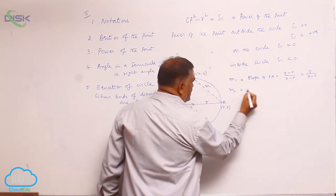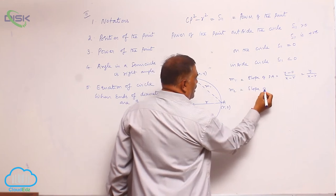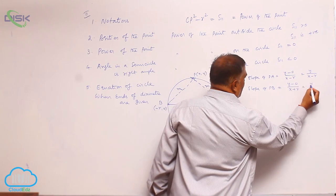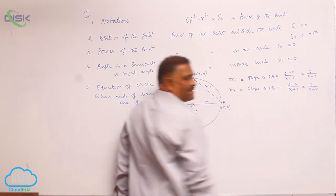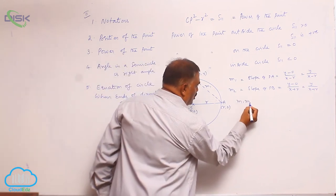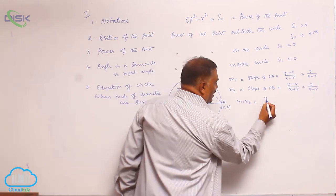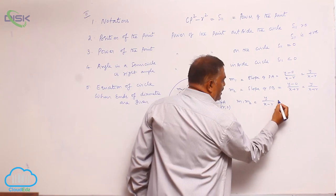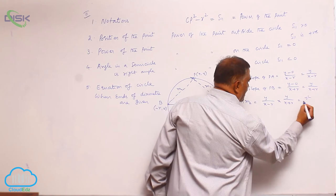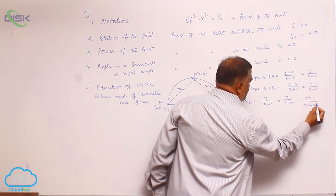M₂ is equal to slope of PB, that is y minus 0 by x plus R, y by x plus R. Consider M₁M₂ is equal to y by x minus R times y by x plus R. It is y square by x square minus R square.